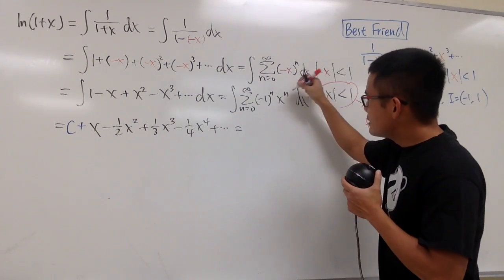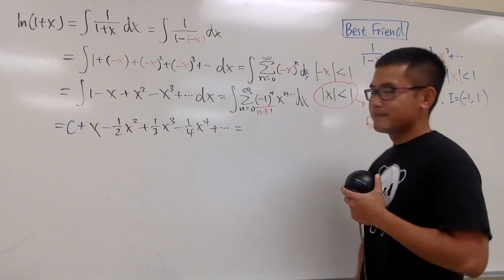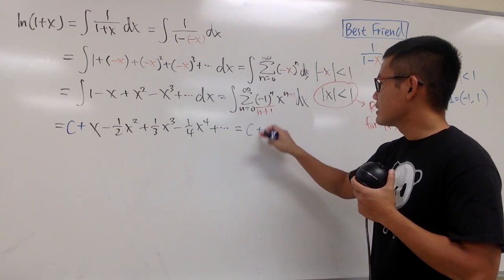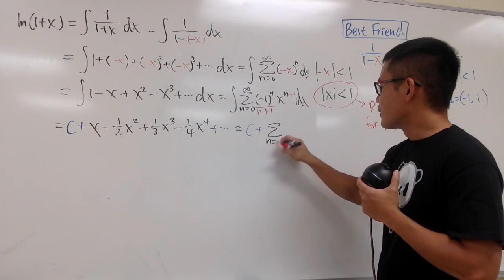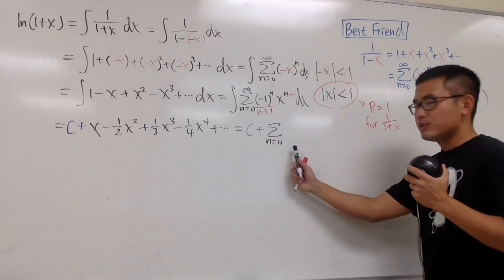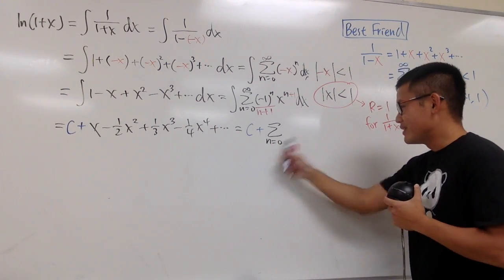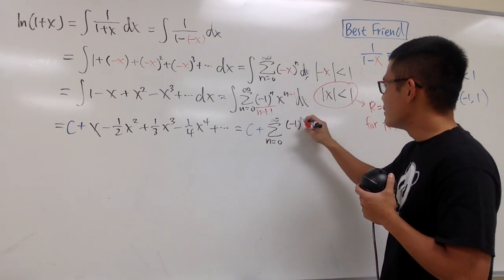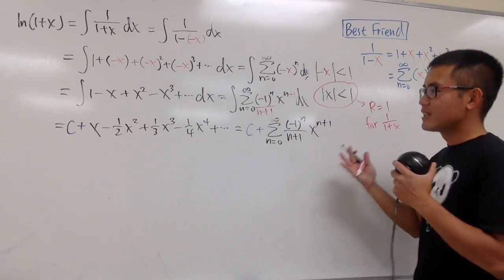Let's integrate the sigma notation form. We have x to the n, so we add 1 to the power and divide by n plus 1. We also put down c plus. This gives us c plus the sum from n equals 0 to infinity of negative 1 to the nth power over n plus 1, times x to the n plus 1. We didn't lose any terms, so the index still starts at 0.